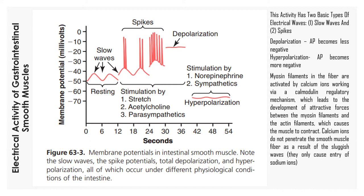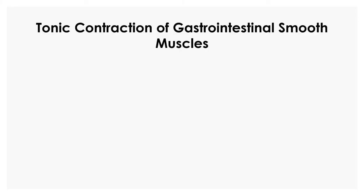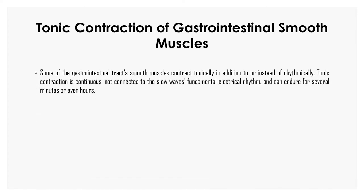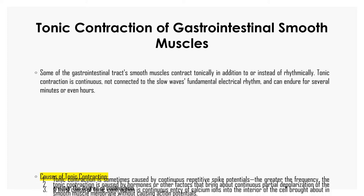Myosin filaments in the fiber are activated by calcium ions working via a calmodulin regulatory mechanism, which leads to the development of attractive forces between the myosin filaments and the actin filaments, causing muscles to contract. Calcium ions do not readily penetrate the smooth muscle fiber; as a result of the slow wave, they only cause entry of sodium ions. Some GI tract smooth muscles also contract tonically — continuously, not connected to the slow wave fundamental electrical rhythm — and can endure for several minutes or even hours.